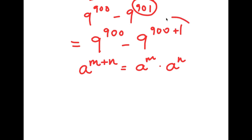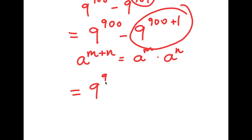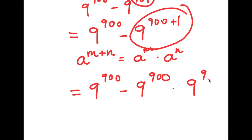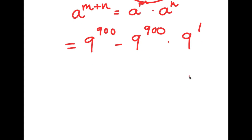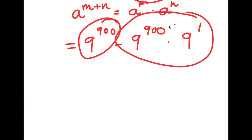So in this case, we have 9 to the power of 900 plus 1, and using this property we can rewrite it as 9 to the power of 900 times 9 to the power of 1. Notice how we have two terms: our first term is 9 to the power of 900, and our second term is 9 to the power of 900 times 9 to the power of 1.